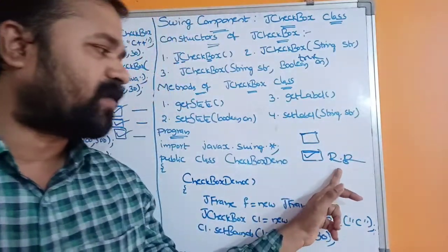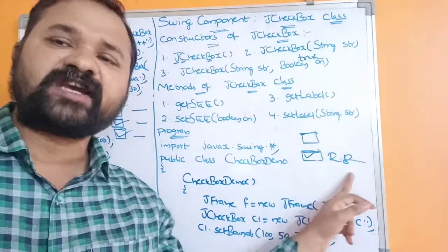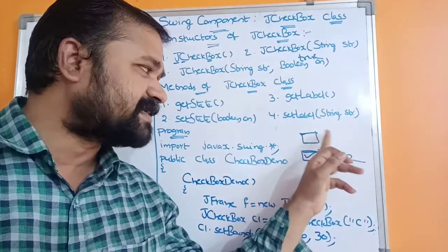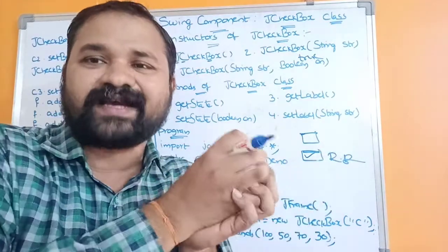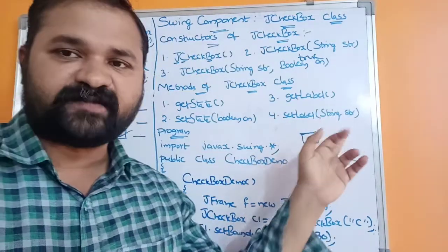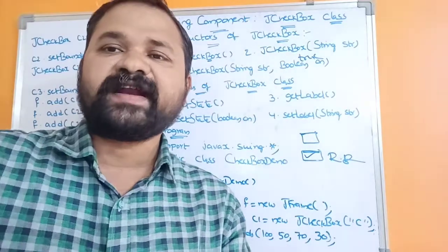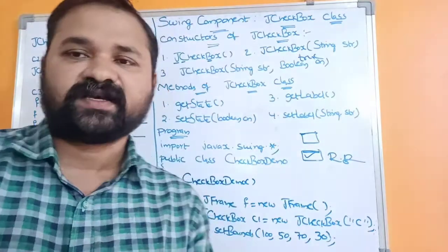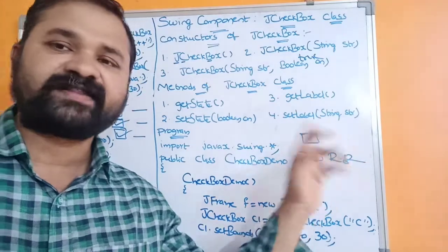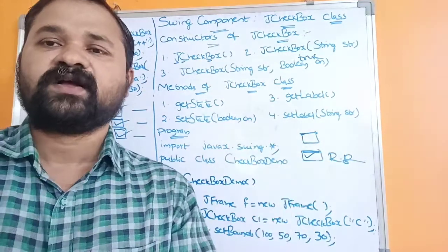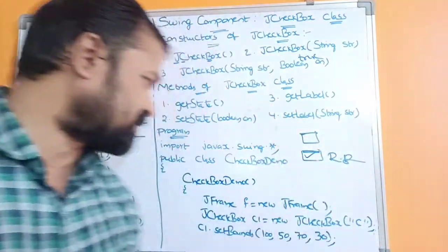The next method is getLabel(), which returns the label associated with the checkbox. The last method is setLabel(String str), which is used to set a label for the checkbox. For example, if a checkbox has no label, you can call c.setLabel("watching movies") and 'watching movies' will become the label. Now let's see an example program to demonstrate JCheckbox.